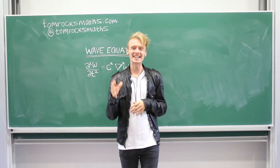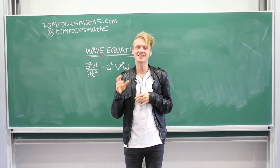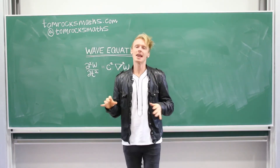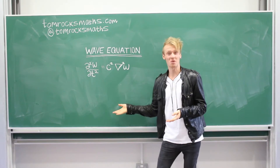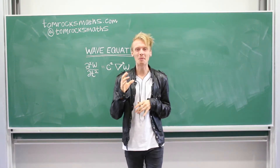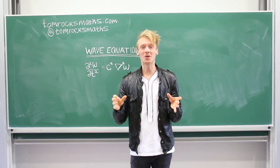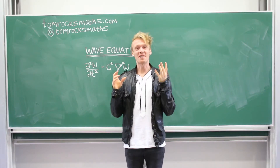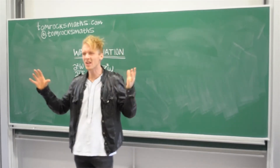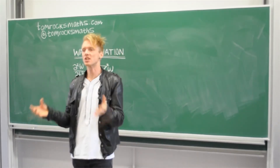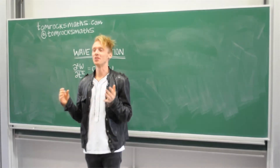Hello and welcome to the latest episode of Equation Stripped, where I take some of the most important equations in maths and strip them back layer by layer so that anyone can understand. This time it's the turn of the wave equation. This started out as a simple model for the vibration of a violin string and eventually led to one of the most important discoveries in all of physics: the fact that light is a wave. The wave equation has many applications across all areas of physics, technology, and society, and the reason for this is we basically live in a world of waves.